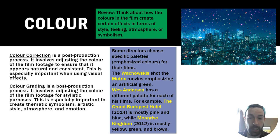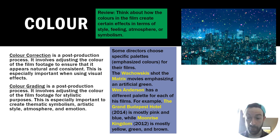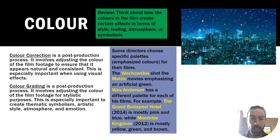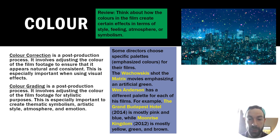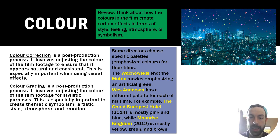Color can be an important part of film and can be changed in the editing process. Color correction is a post-production process that involves adjusting the color of film footage to ensure it appears natural and consistent — especially important when inserting visual effects, just making sure everything looks right and nothing looks out of place. Color grading is a different post-production process that involves adjusting color for stylistic purposes, especially to create thematic symbolism, artistic style, atmosphere, and emotion.